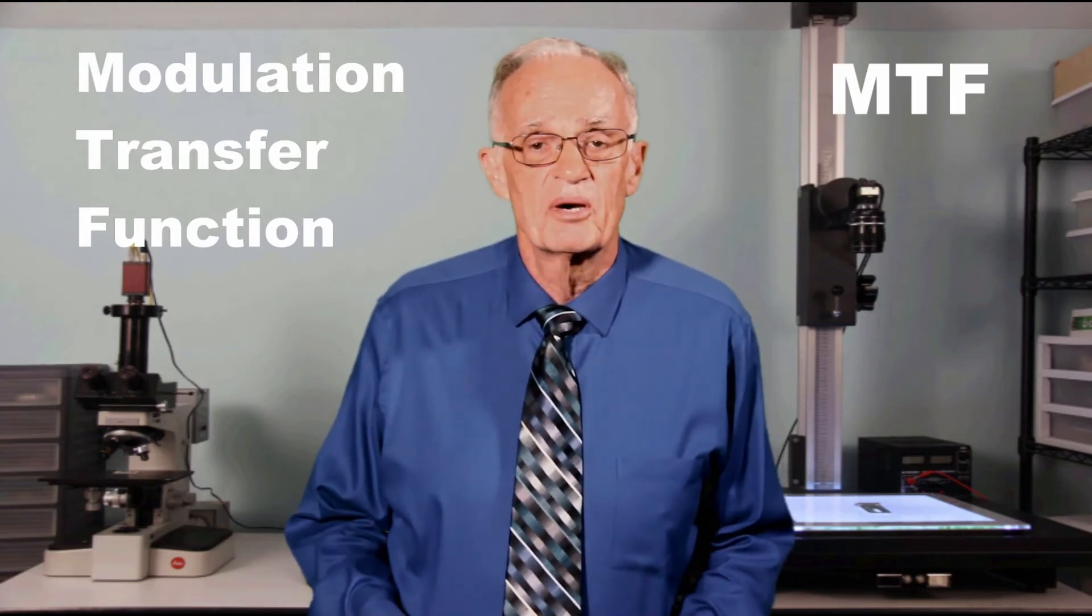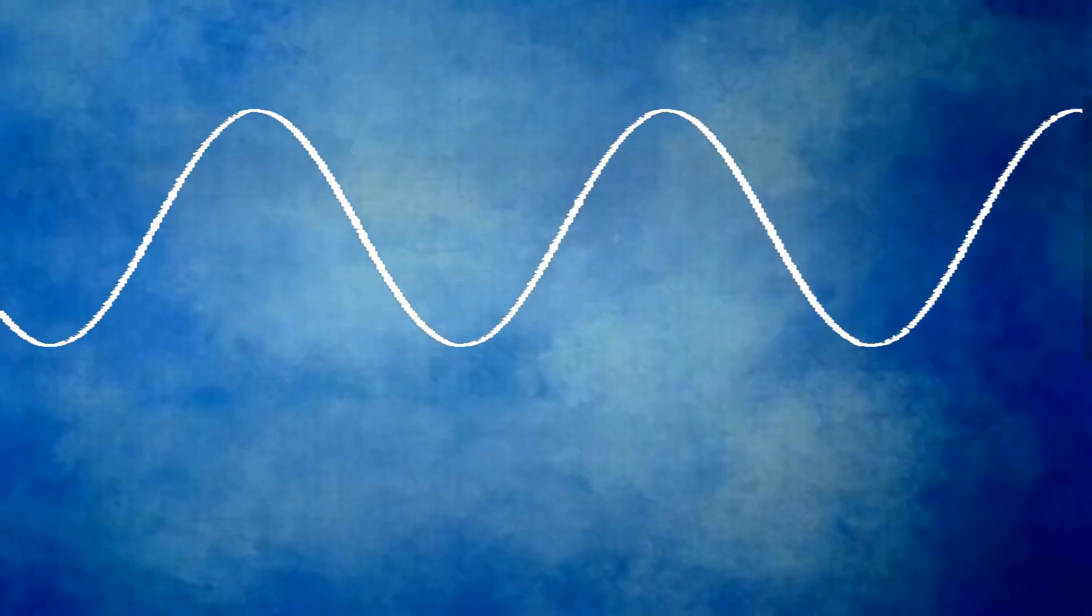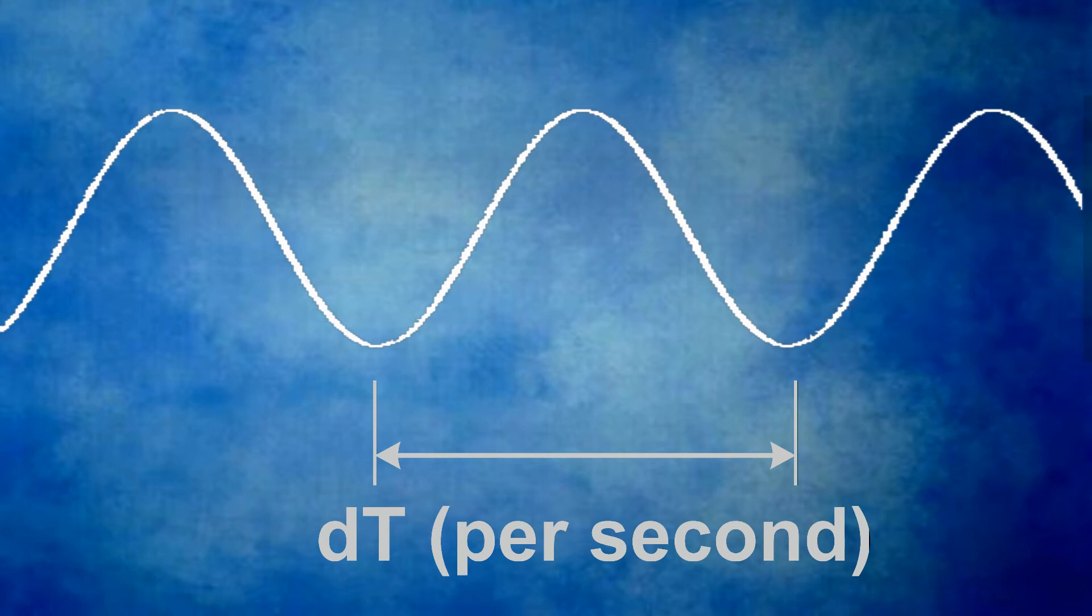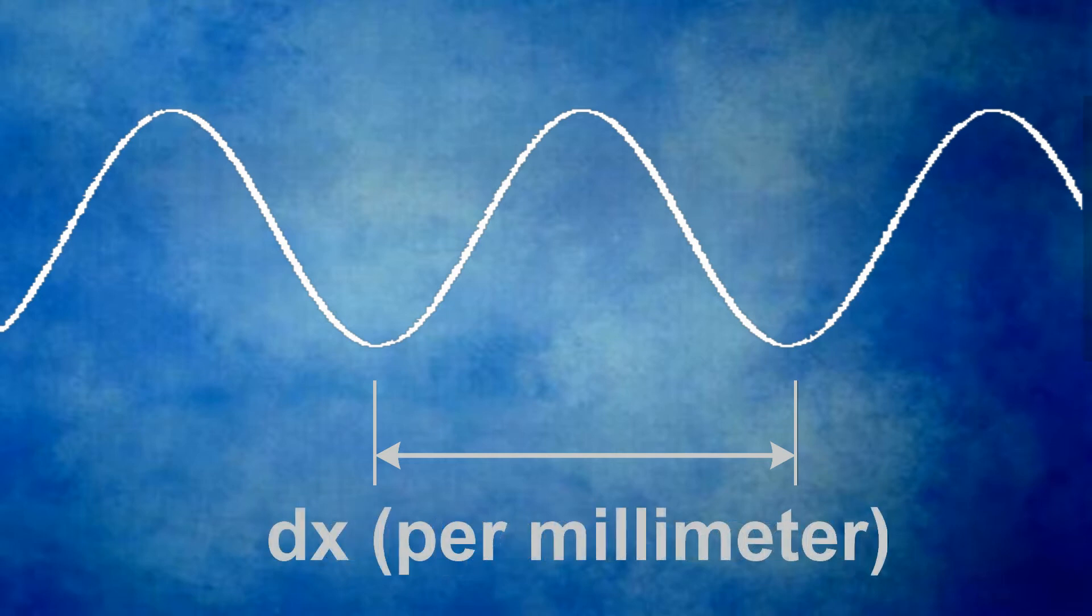You may be wondering how you can learn anything about the resolving power of a lens. Fortunately there is a measurement called the modulation transfer function or simply MTF that helps. The MTF is a graph of contrast as a function of spatial frequency. Spatial frequency is events per unit distance, for example cycles per millimeter. MTF is based on frequency as sine waves.